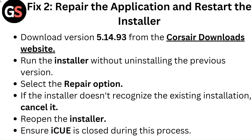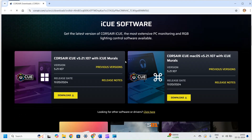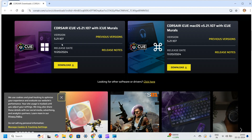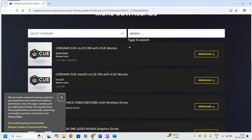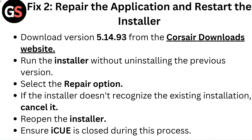Fix 2: Repair the application and restart the installer. Download version 5.14.93 from the Corsair downloads website. Run the installer without uninstalling the previous version and select the Repair option. If the installer does not recognize the existing installation, cancel it, reopen the installer, and ensure iCUE is closed during this process.